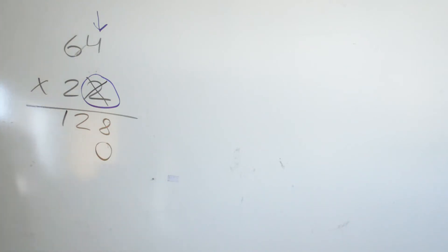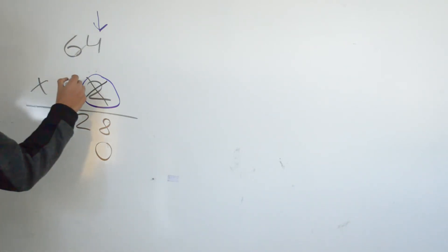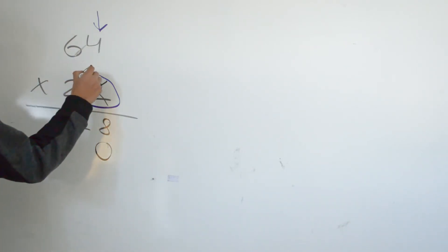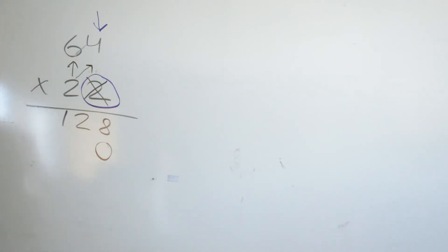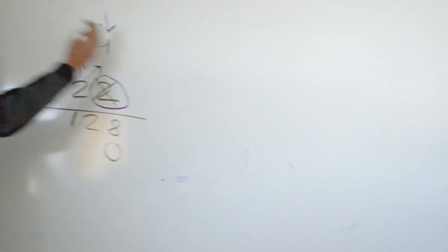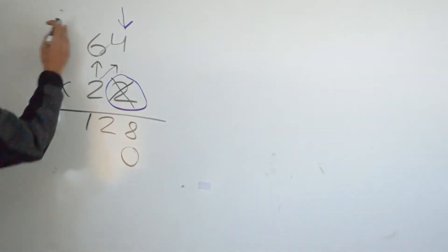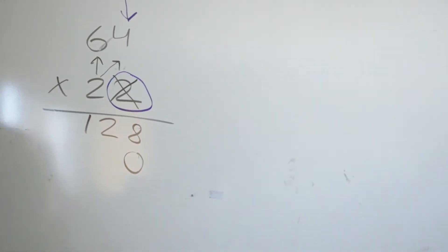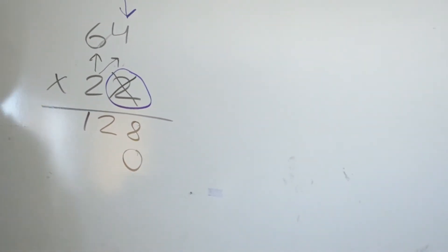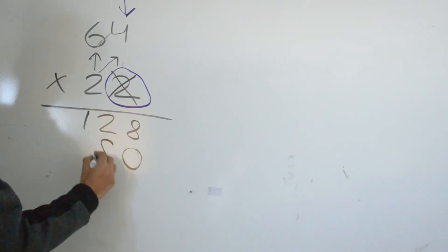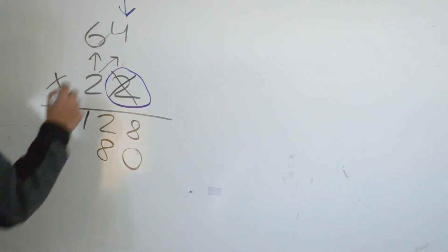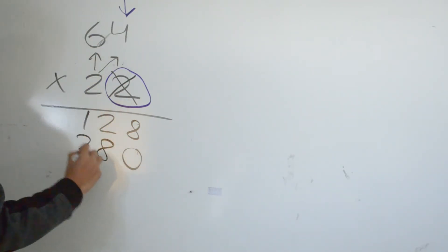Now we multiply 2 times 4 and 2 times 6, because each time we multiply two digits by two digits, we start from right to left. So 2 times 4 is 8, 2 times 6 is 12.